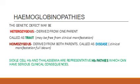The second type is homozygous, where the defect is derived from both parents. Then it is known as disease, and the clinical manifestation is full-blown — that is, it shows very marked clinical manifestation.